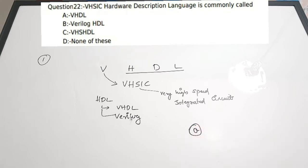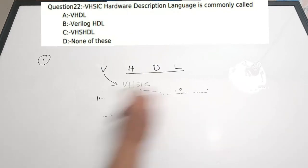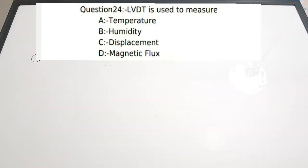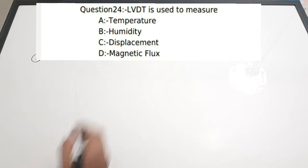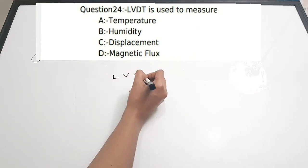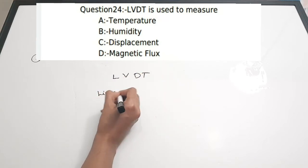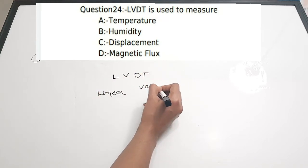Moving on to the second question: LVDT is used to measure — A) Temperature, B) Humidity, C) Displacement, D) Magnetic flux. LVDT stands for Linear Variable Differential Transformer.